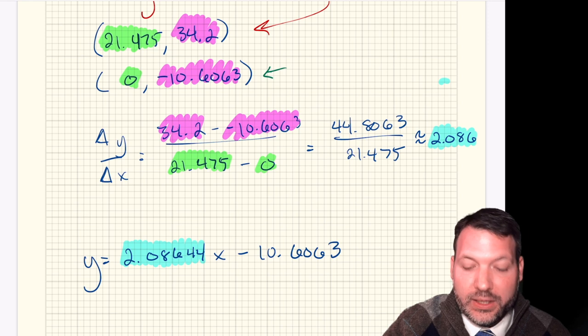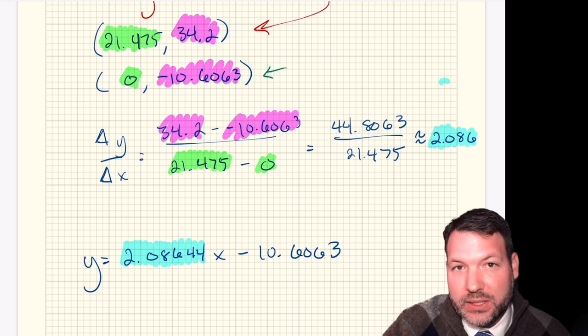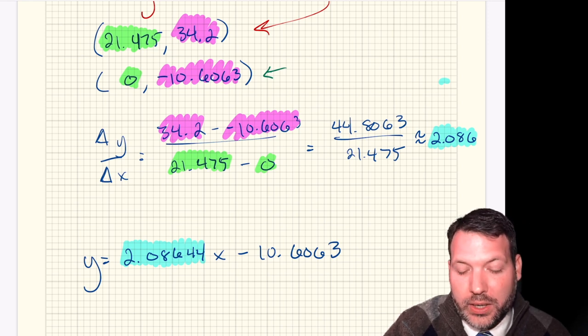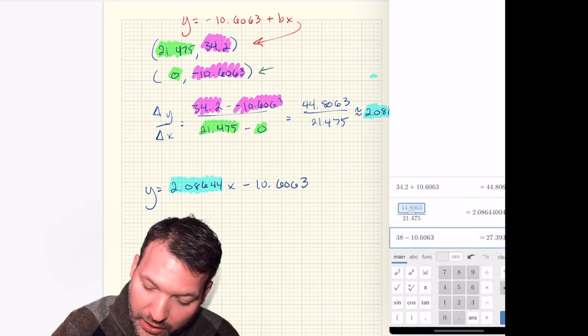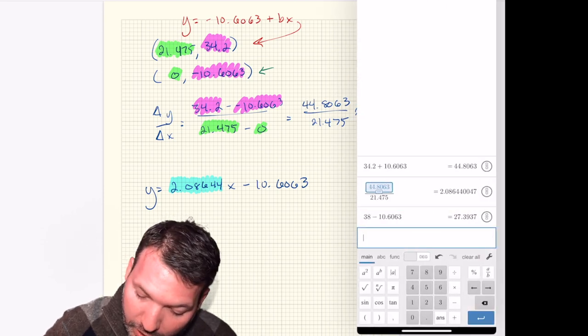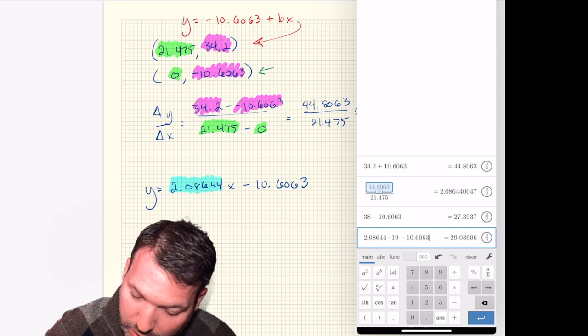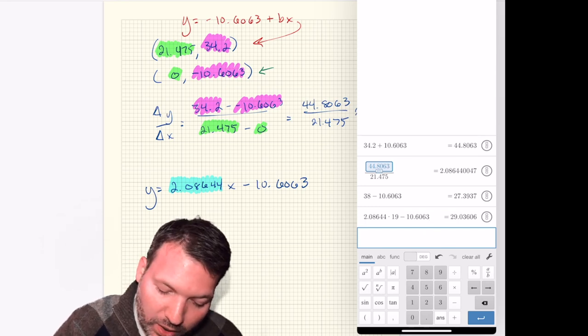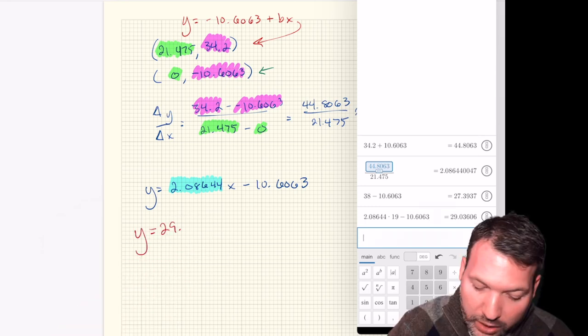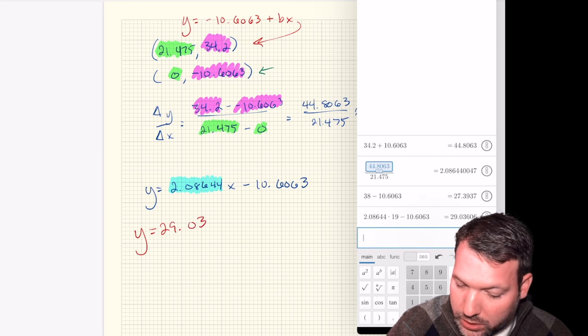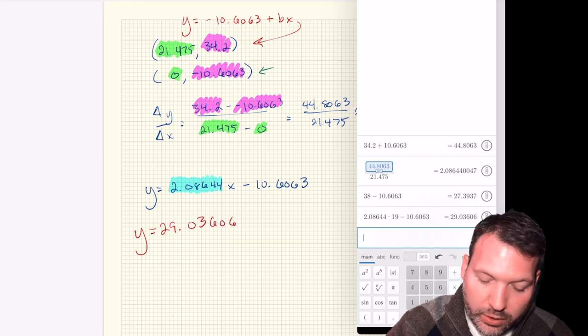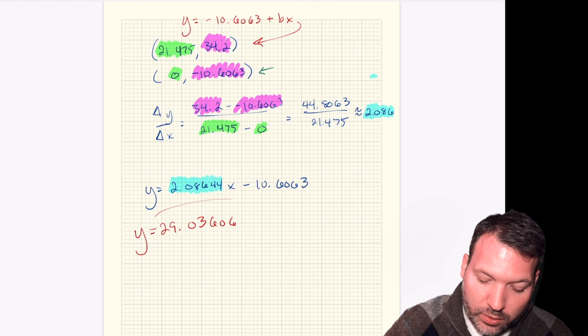And so we can plug that back into the original equation that we were given. y equals 2.08644x minus the 10.6063. Finally, if we plug 19 in there, we can figure out our prediction. 2.08644 times 19 minus 10.6063. We would say, well roughly, you'd expect 29-ish chirps in that 15-second period. And so that would be my answer to that question.